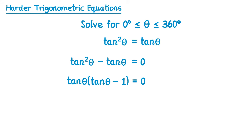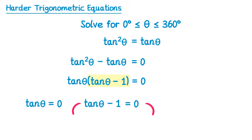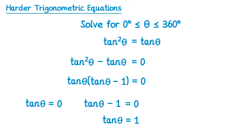We now have two things multiplied together that equal 0, so at least one of them must be 0. This gives us two equations: tan theta equals 0, or tan theta minus 1 equals 0. Rearranging the second by adding 1 to both sides gives tan theta equals 1. So we've turned this complicated equation into two straightforward equations: tan theta equals 0 and tan theta equals 1.